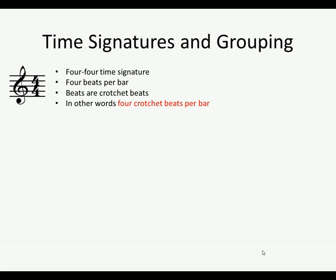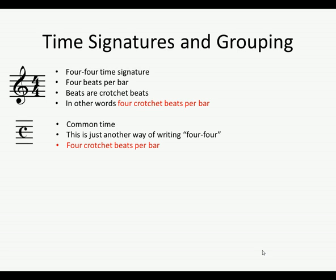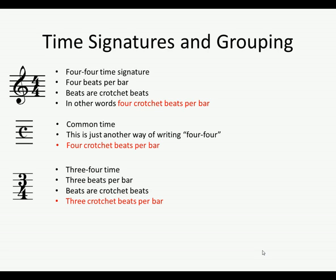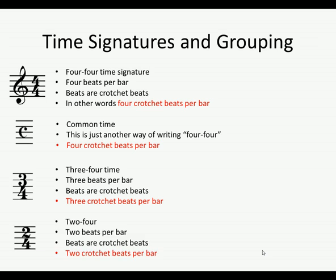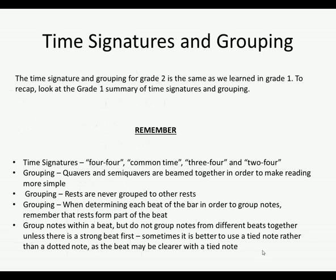Time signatures and grouping — this is exactly what we did in Grade 1. We have 4/4, which is four crotchet beats per bar. We have common time, which is just another way of writing 4/4 — again, four crotchet beats per bar. We have 3/4 time, which is three crotchet beats per bar, and 2/4 time, which is two crotchet beats per bar. The time signatures you need to know are 4/4, common time, 3/4 and 2/4.